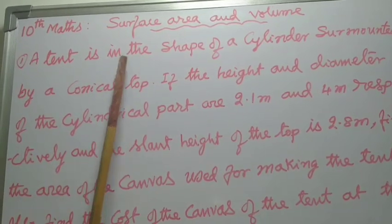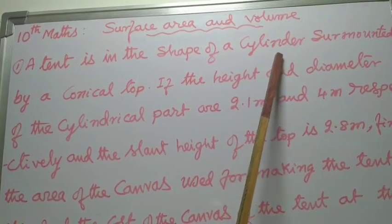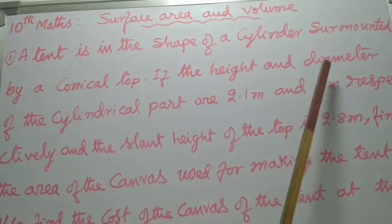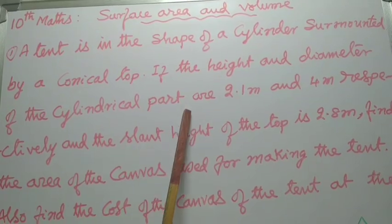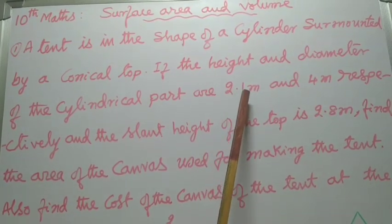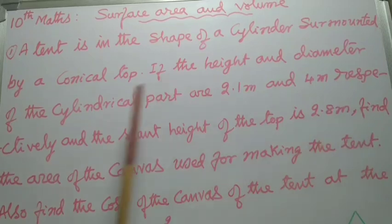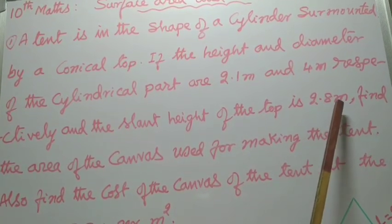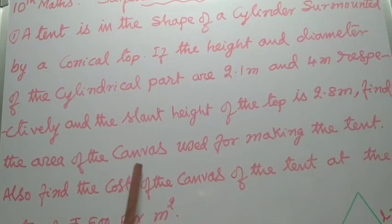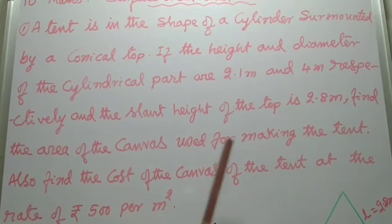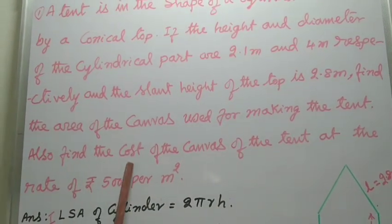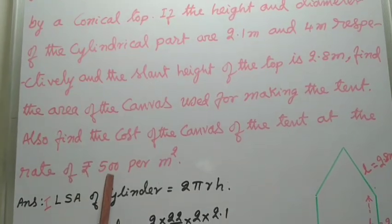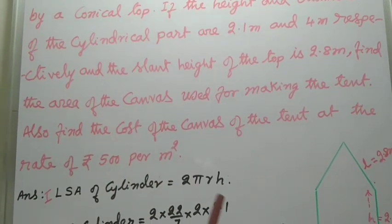A tent is in the shape of a cylinder surmounted by a conical top. If the height and diameter of the cylindrical part are 2.1m and 4m respectively, and the slant height of the top is 2.8m, find the area of the canvas used for making the tent. Also, find the cost of the canvas of the tent at the rate of Rs. 500 per m².